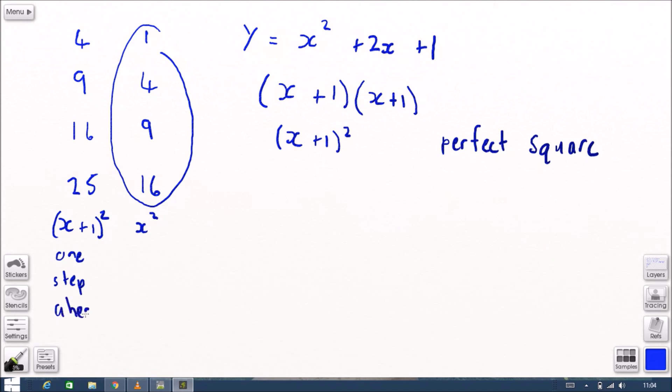So instead of starting at 1 squared, it starts at 2 squared, and then instead of having 4, it's 9 instead. So it's just one step ahead.